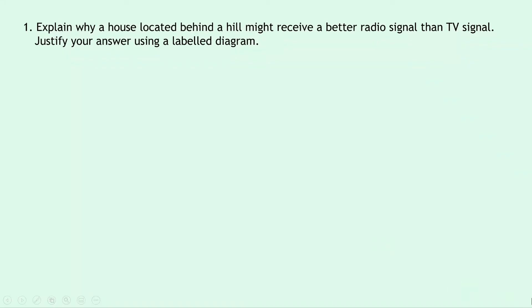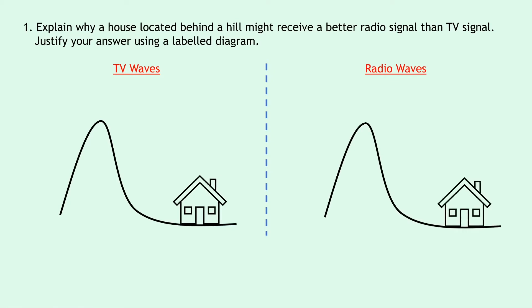Now in our one and only question it says explain why a house located behind a hill might receive a better radio signal than TV signal. Justify your answer using a labelled diagram. What we're going to do is split our page into two. We're going to have TV waves on the left and radio waves on the right. And because it mentions a hill and a house located behind a hill, we're going to draw both a hill and a house for both situations.